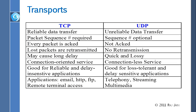TCP is good for reliable and delay-insensitive applications. UDP is good for loss-tolerant and delay-sensitive applications — anything that can lose packets and not care, where delay is important. Those applications include telephony and streaming multimedia. On the TCP side, we have email, HTTP, FTP, remote terminal access, and so on.